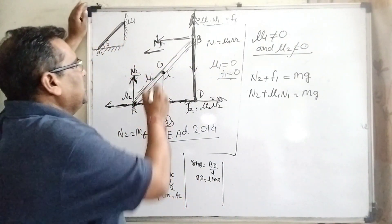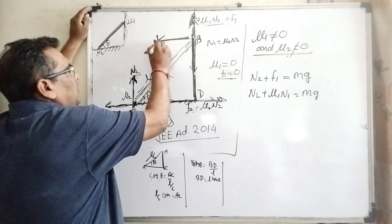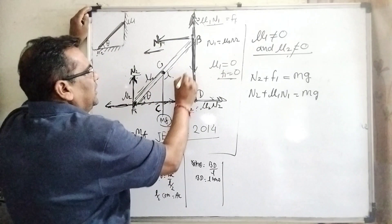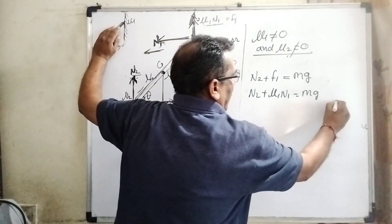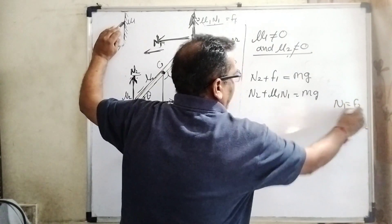Then N2, but f1 equals mu1 N1, equals mg. Now again, N1 is applied in the left direction and here it is balanced by f2. So N1 equals f2.